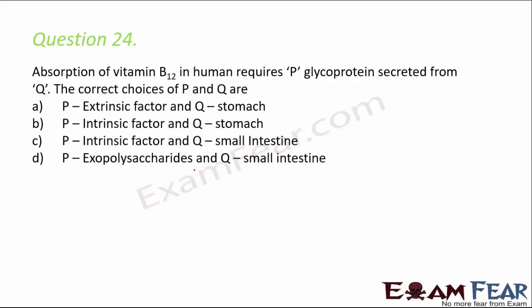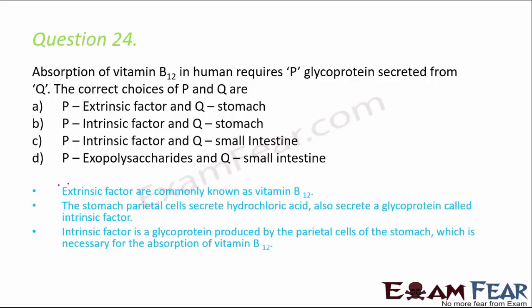Question number 24: absorption of vitamin B12 in humans requires a glycoprotein secreted from where? Vitamin B12 is commonly known as the extrinsic factor. To absorb vitamin B12, an intrinsic factor is needed, and it is the parietal cells in the stomach that secrete it — along with hydrochloric acid, they also secrete a glycoprotein called intrinsic factor.